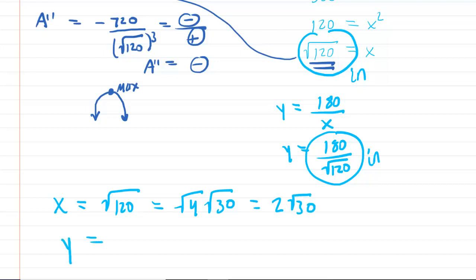And then for the Y value, you would have 180 over the 2 root 30. And then if you divide the 180 by 2, you would get 90 over root 30. So that's just a way of cleaning up the X and Y values.